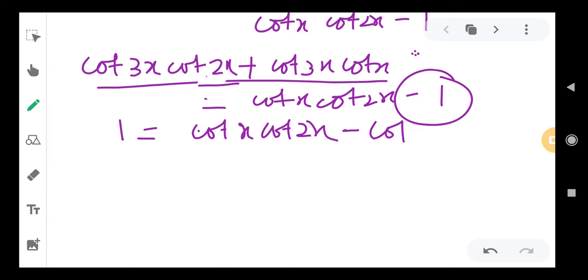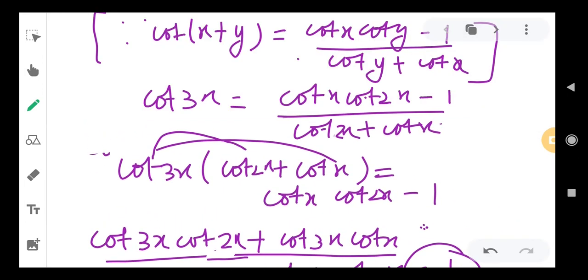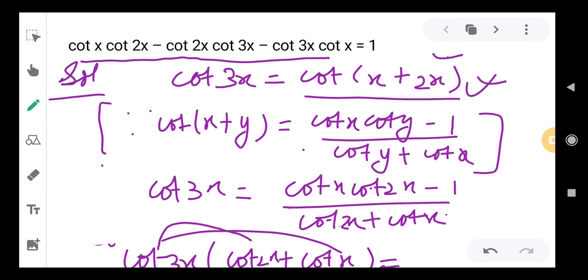So now cot x cot 2x - cot 2x cot 3x - cot 3x cot x. This is what we need to prove, and we have proved it now. So cot x cot 2x - cot 2x cot 3x - cot 3x cot x equals 1. Proved here.